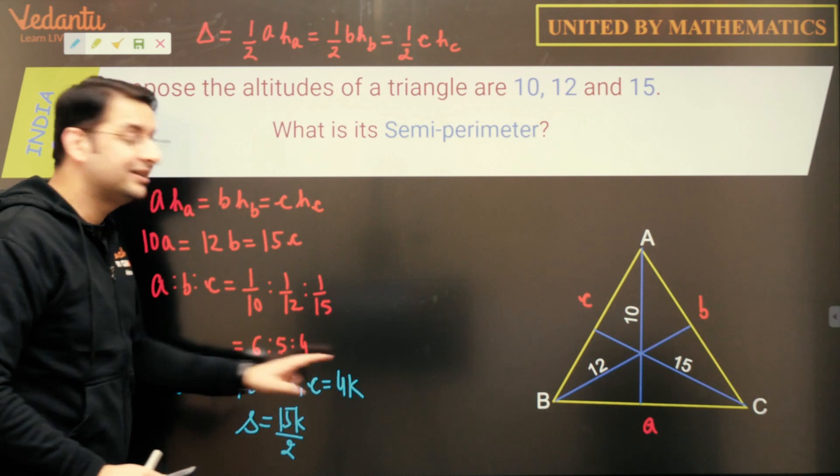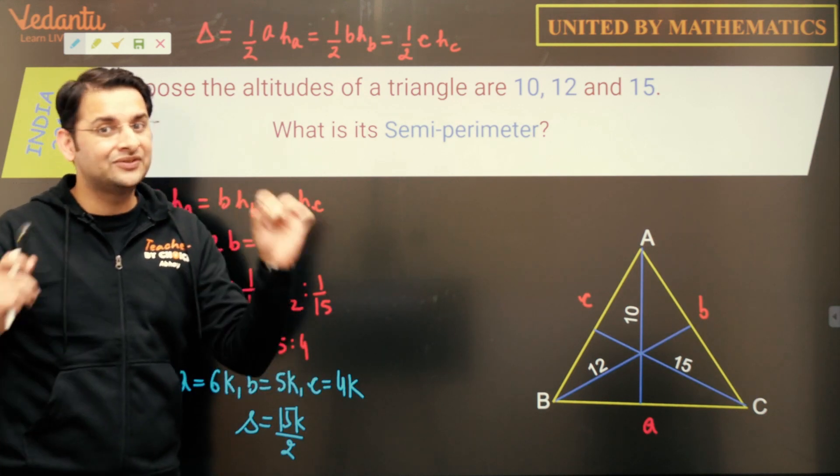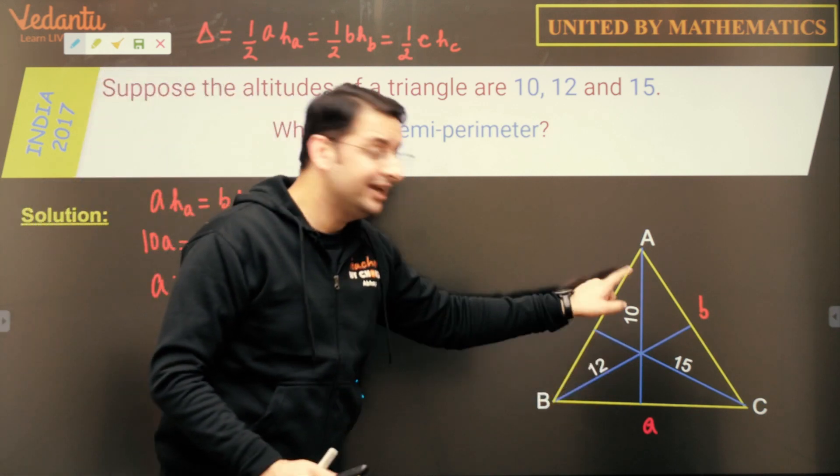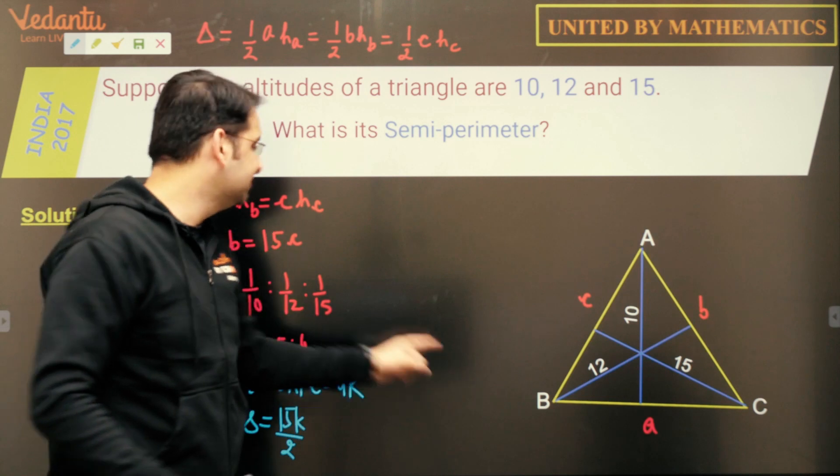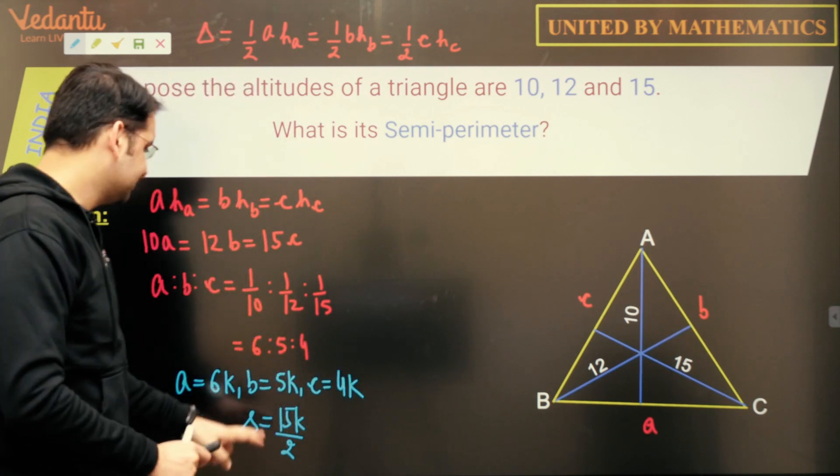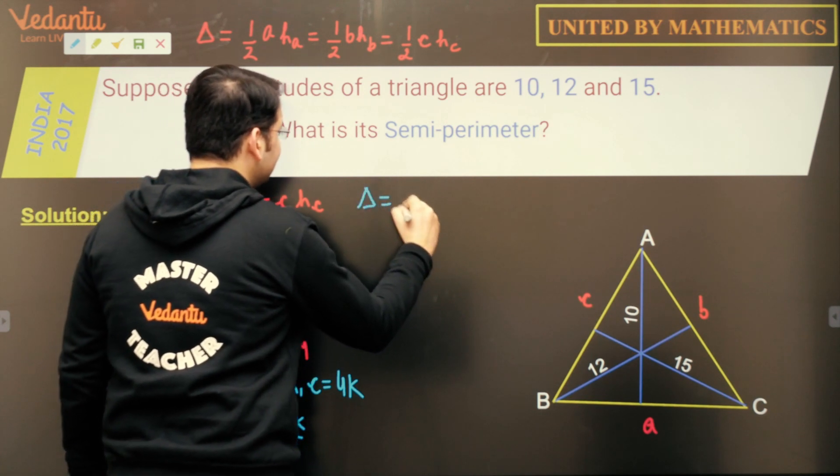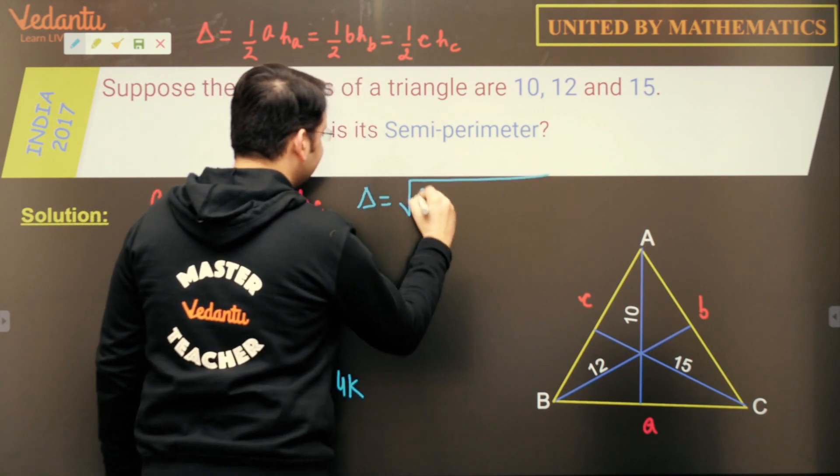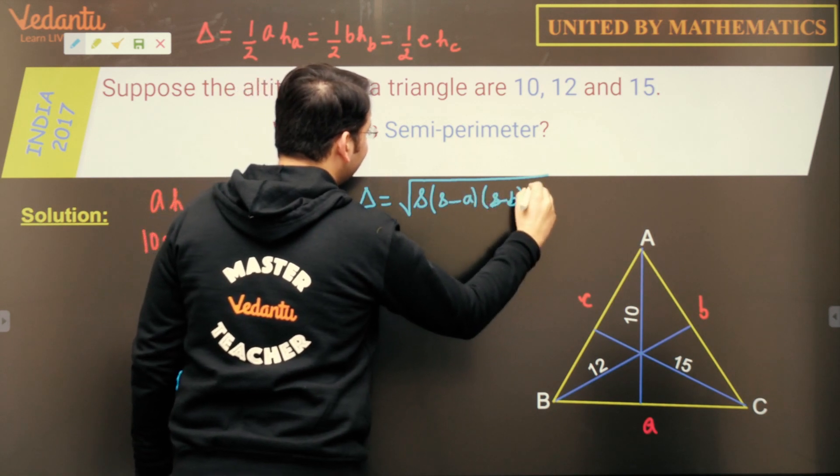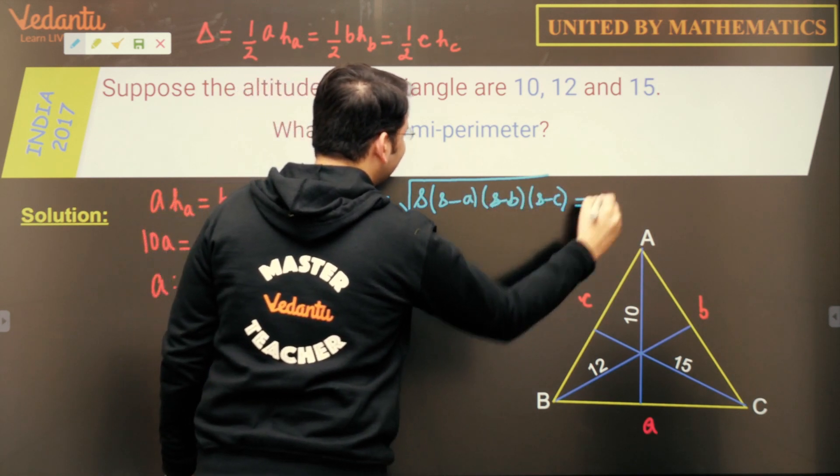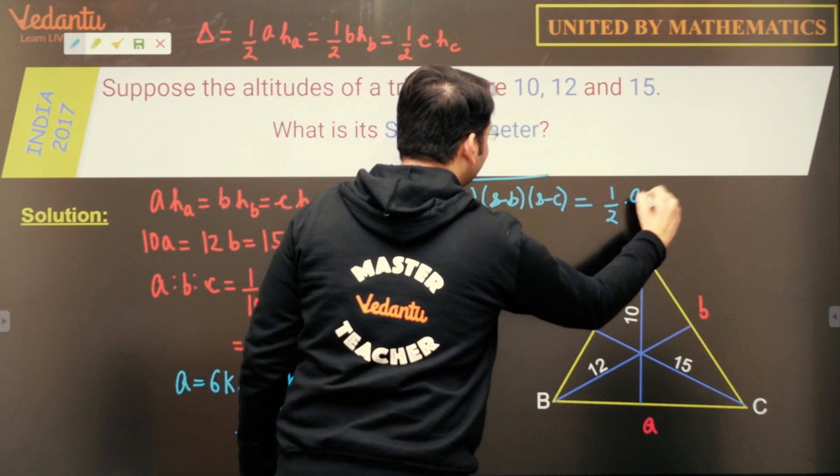Now I have all the three sides of the triangle though in terms of K, I can equate the area of the triangle using half base height of any one of the sides with the Heron's formula using all the three sides here. So if S is 15K by 2 using Heron's formula which is root of S, S minus A, S minus B, S minus C and let us equate this to half into A into HA.